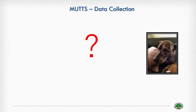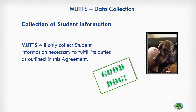A provision on data collection is suspiciously absent from Martin's terms of service agreement — very much a bad dog. If he were having a good day, he would have included a provision to the effect that MUTTS will only collect student information necessary to fulfill its duties as outlined in this agreement. This means they won't be secretly collecting and tracking additional data about students unrelated to the service being provided — and you'd be surprised how frequently this actually happens.